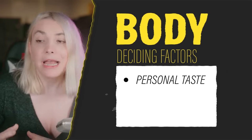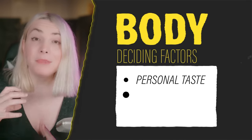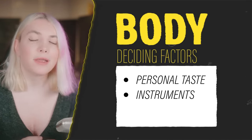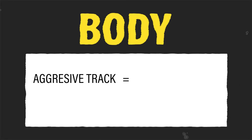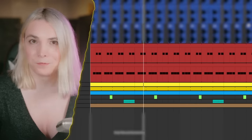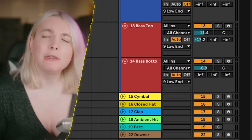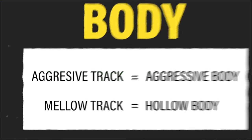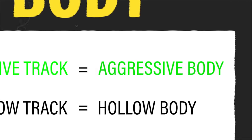When it comes to the body of your kick, the most important thing is your personal decisions — how you like your kick — plus how many main instruments you have in your song. The body will really define the character of your song. For example, if you're going for an aggressive sound, get an aggressive kick; if you're going for a smoother sound, get a more hollow kick. Let's do a test with a loop — decide what type of body the kick should have.